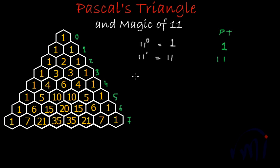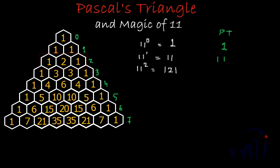What is 11 to the power 2? It is 11 multiplied by 11, which is 121. It can be found in the second row of Pascal's Triangle. Writing the numbers: 1 at the units place, 2 at the tens place, and 1 at the hundreds place — giving 121.